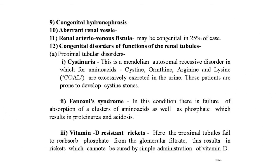The ninth congenital anomaly is congenital hydronephrosis, which will be covered separately in the lecture series. The tenth is aberrant renal vessels. The eleventh is renal arteriovenous fistula, which may be congenital in 25% of cases. The next anomaly is congenital disorder of function of the renal tubules.